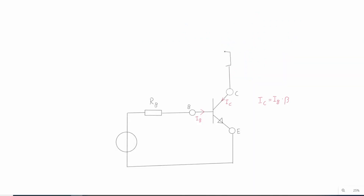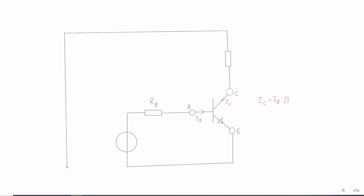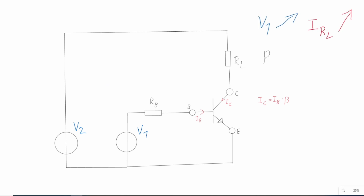Let's go back to the whiteboard and finish the schematic. If we connect a resistor as a load between the collector and another supply voltage, we can control the current through this load by adapting the voltage at the base or the resistor before the base.